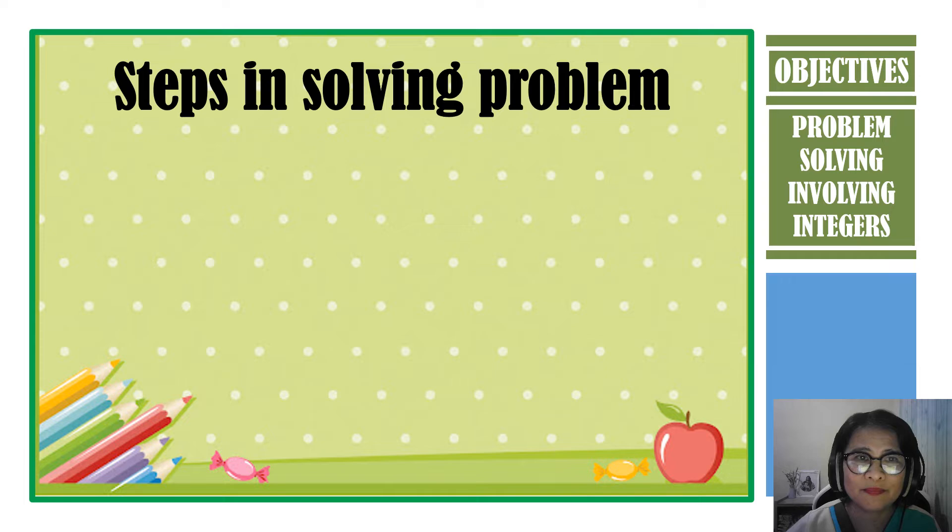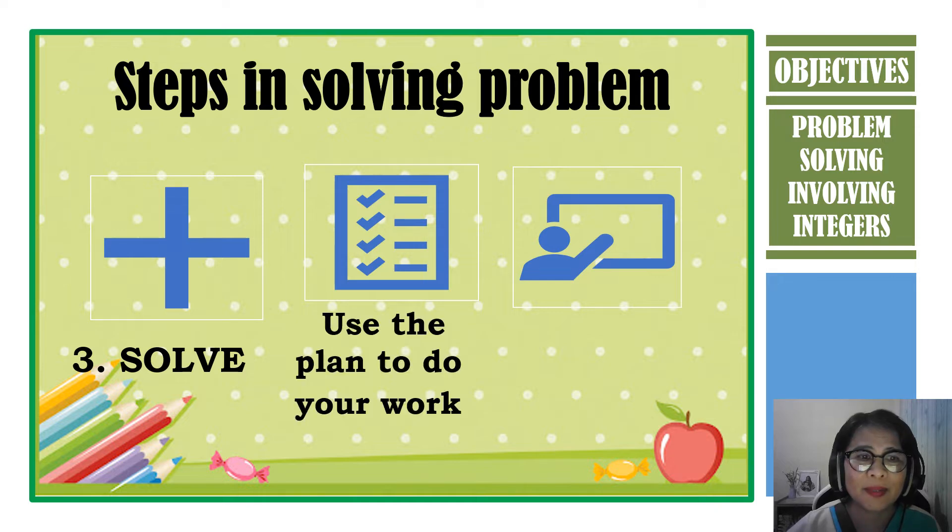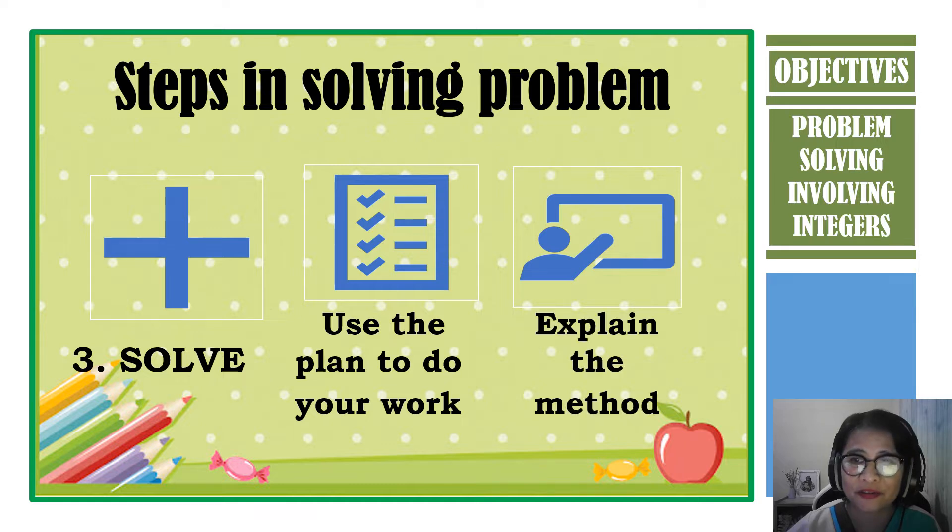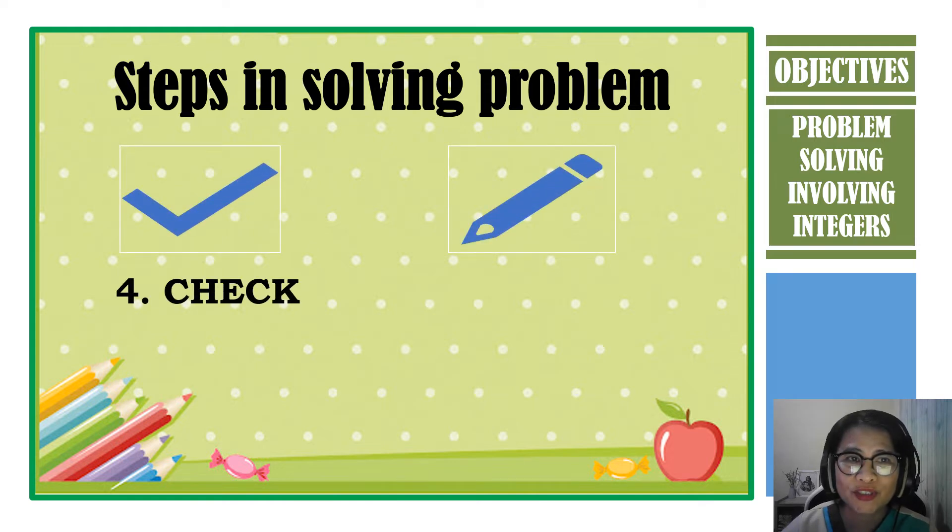The third step is to solve and execute your plan. Use the plan to do your work and then explain the method you use. The last step is to check our answer. Why do we need to check the answer? To make sure your answer makes sense.